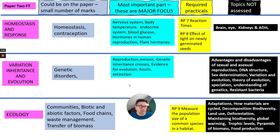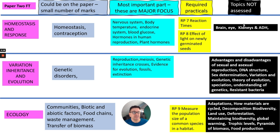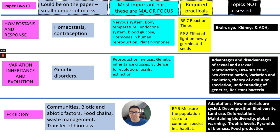Paper 2 has a big difference — far less for you to revise. They've taken out some substantial areas. For homeostasis and response, you will need to know about nerves, reflex actions, body temperature, and blood glucose. The hormones in human reproduction and the menstrual cycle are included — that's quite a large section. You will need to know the reaction times experiment and the effect of light on newly germinated seeds, which is related to auxins. You won't need to revise anything about the brain, the eye, the kidneys, or ADH.